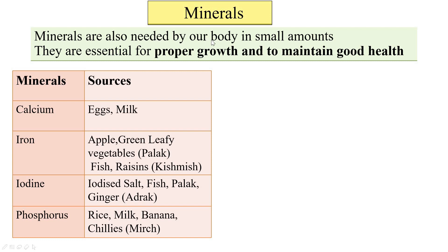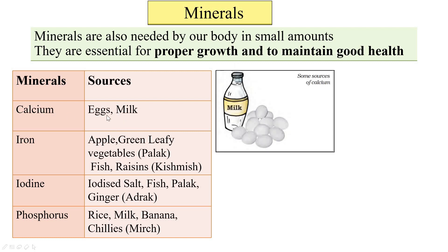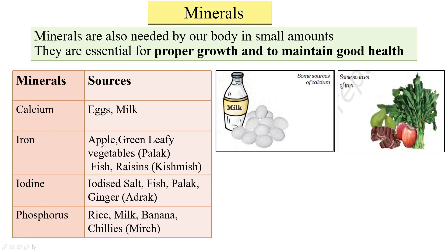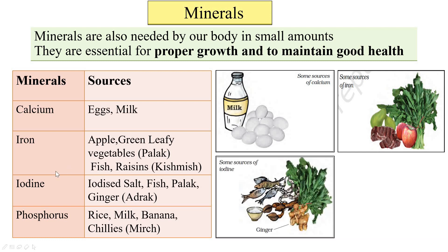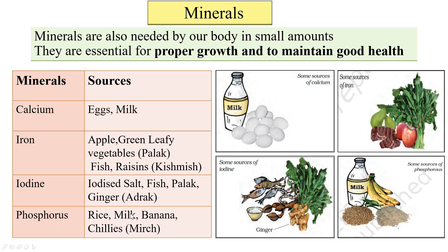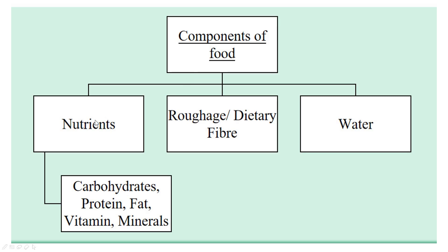Minerals are also needed by our body in small amounts and are essential for proper growth and maintaining good health. We get calcium from eggs and milk; iron from apple, green leafy vegetables such as spinach, fish, and raisins; iodine from iodized salt, fish, spinach, and ginger; and phosphorus from rice, milk, banana, and chilies.